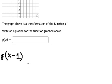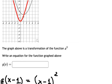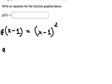We have x minus one squared. The graph goes up two units, so we need to add two to both sides.